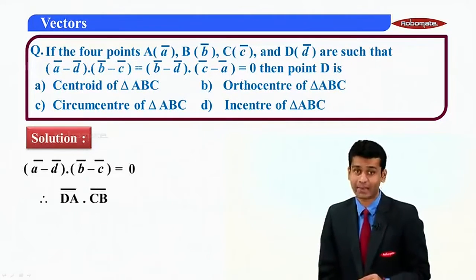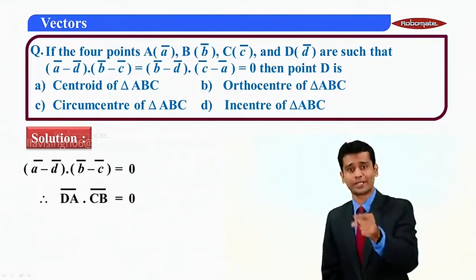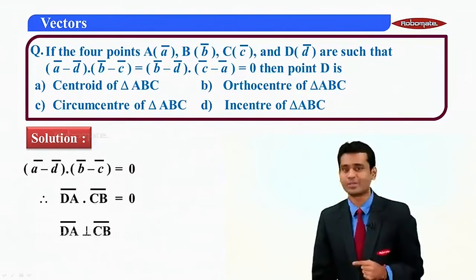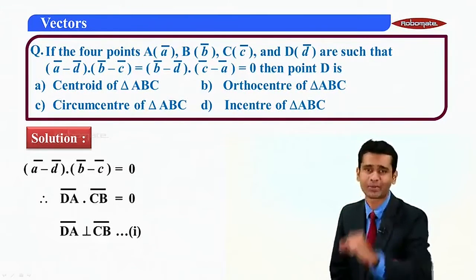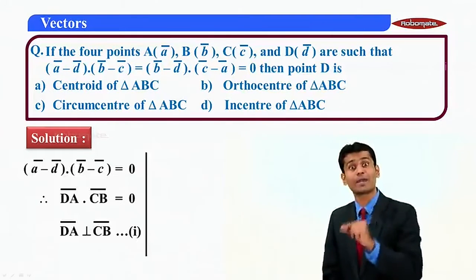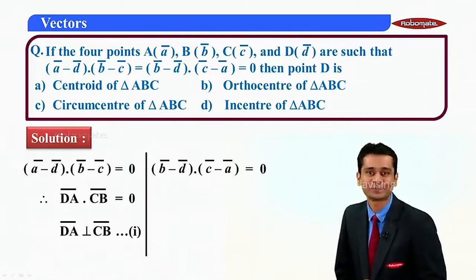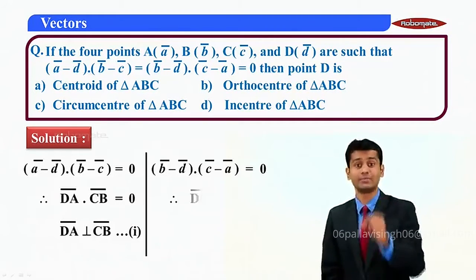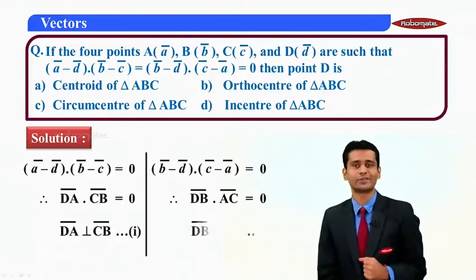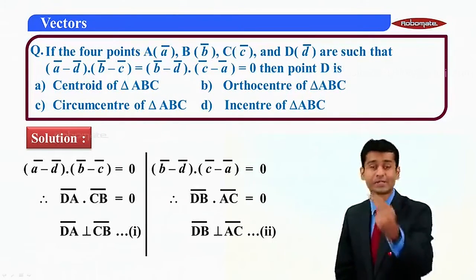From (a-bar − d-bar)·(b-bar − c-bar) = 0, we get DA-bar · CB-bar = 0. Since the dot product is zero, DA-bar is perpendicular to CB-bar — equation 1. From (b-bar − d-bar)·(c-bar − a-bar) = 0, we get DB-bar · AC-bar = 0, so DB-bar is perpendicular to AC-bar — equation 2.